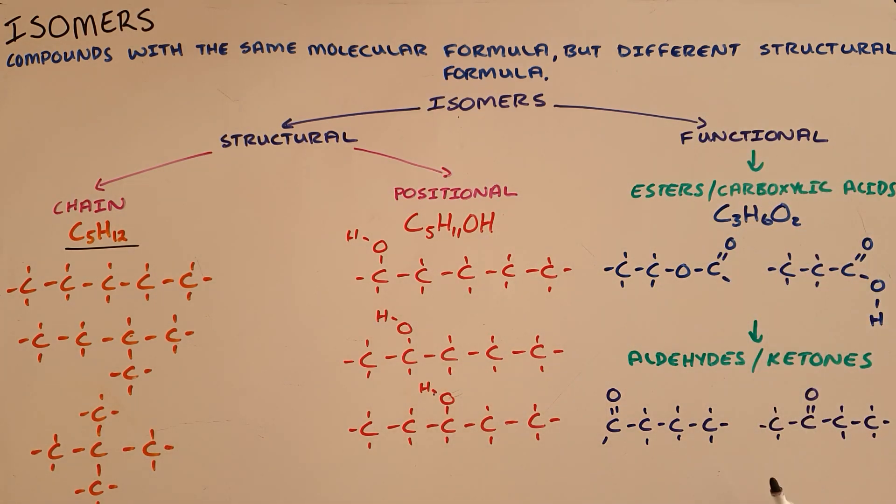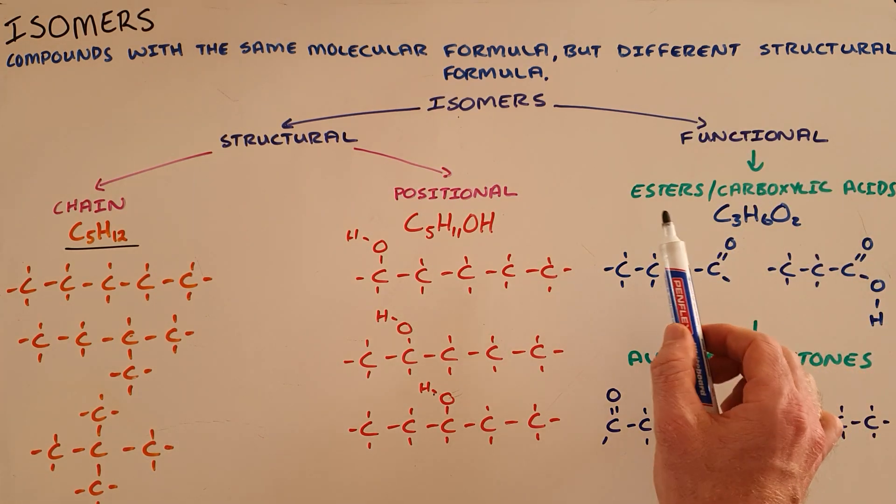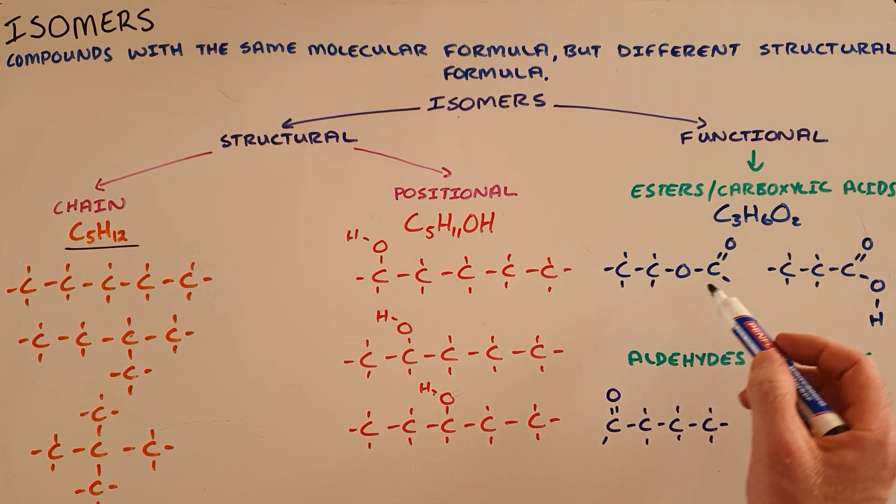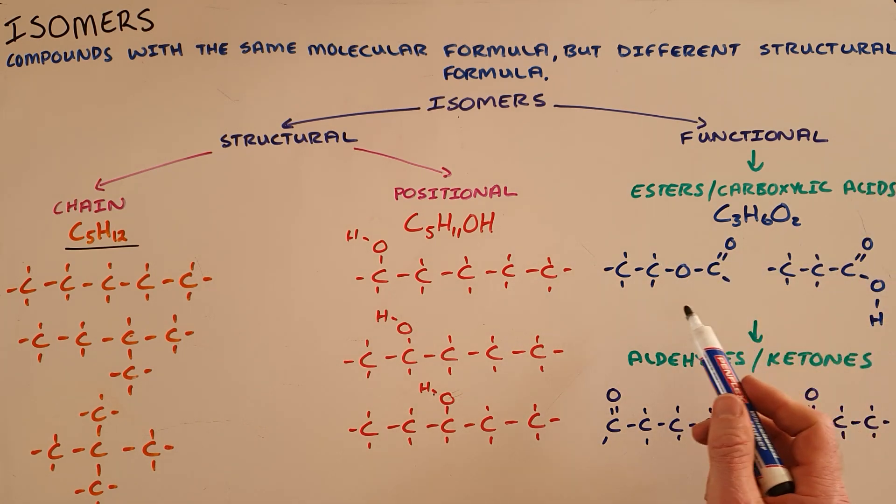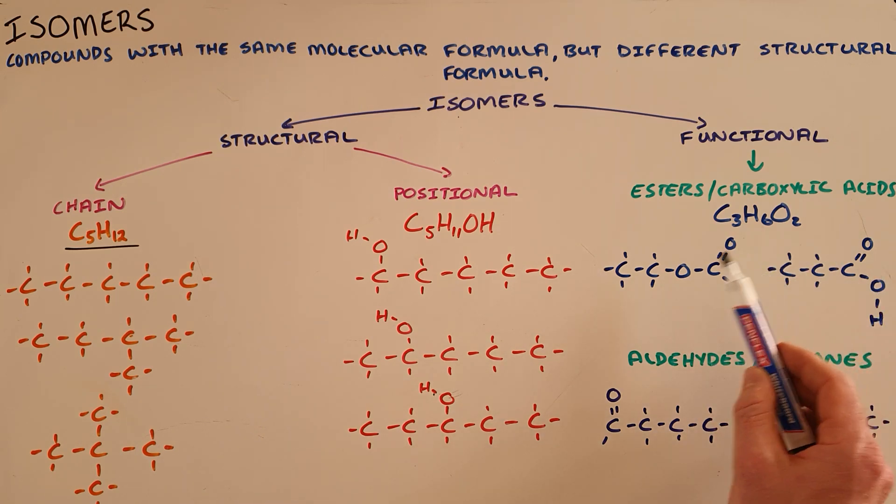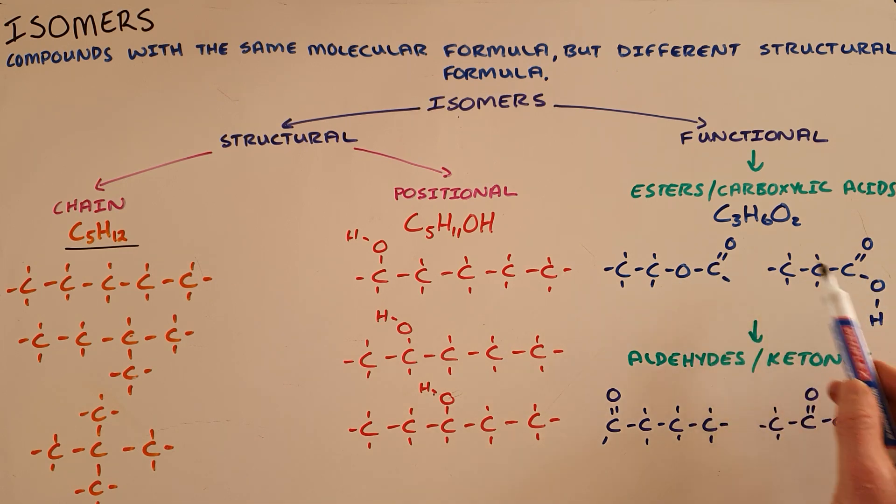Functional isomers come in two variations. The first is that between esters and carboxylic acids, and that says that the only possible functional isomer for an ester is a carboxylic acid. As we can see in this example, both of these two compounds have the formula C3H6O2.